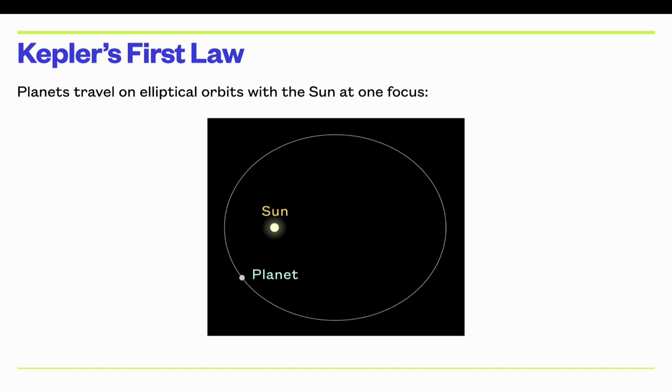Kepler's first law says that planets travel in elliptical orbits with the Sun at one focus. So here's a sketch of an elliptical orbit with a planet on it. The Sun is at one focus. At the other focus is just empty space.